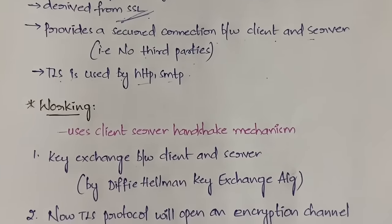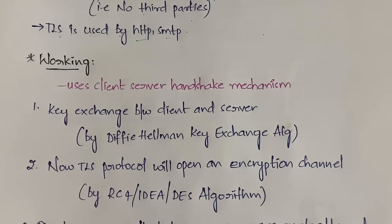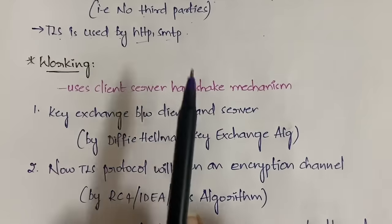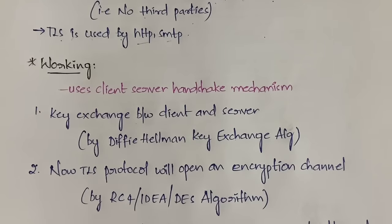Now let's look at how TLS works. It uses the client-server handshake mechanism. First, a connection is established between the client and server — this can be a wired or wireless connection. Once the connection is established, key exchange happens: the client and server exchange their keys and verify that each is the appropriate party.